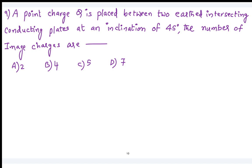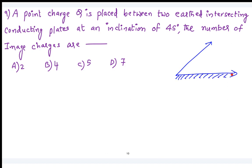This is a very interesting question. There is a point charge Q placed between two grounded intersecting conducting planes at an inclination of 45 degrees. Find the number of image charges. So there are two conducting plates, both grounded, with charge Q between them, inclined at 45 degrees.